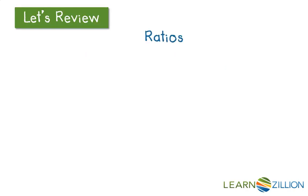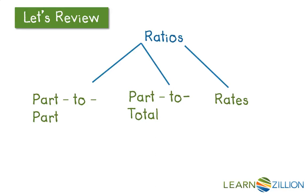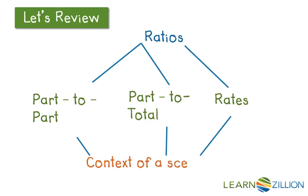Remember also that a ratio is a rather broad family within the mathematical world. Though it always talks about two or more quantities being compared, those quantities can be two or more different parts, a part compared to its total, or it can be a rate. The label of part-to-part or part-to-total is not so much important as the actual context of the scenario, which through language or other indicators will help us understand what's actually going on.